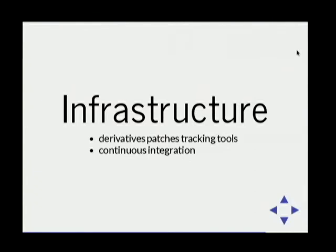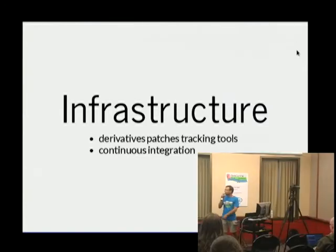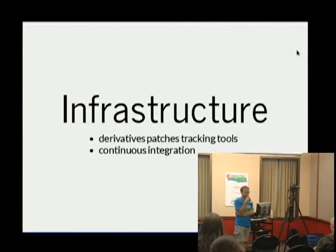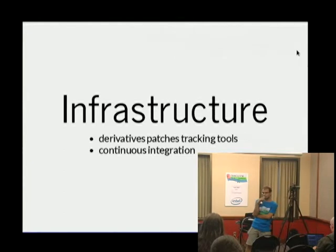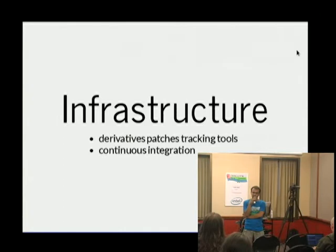It would also be good if there were improvements made to the Debian patch-tracking tools — this has been discussed recently on the Debian devel mailing list. If you're looking for a smallish coding task, that might be for you. Also, with Debian continuous integration, things are moving forward quite fast, and possibly at some point we would like to base Tails on Debian testing, or at least quarterly snapshots of the unstable tree.